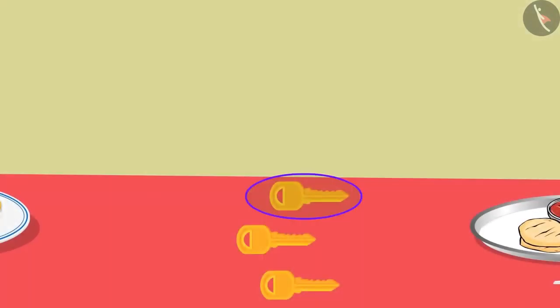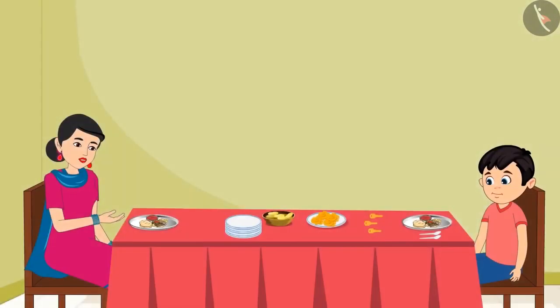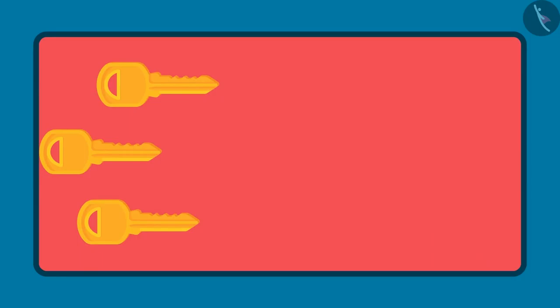One is my room key, one is your room key, and one is the house key. Now can you tell me Chotu, which of the three keys is the longest key and which key is the shortest key?